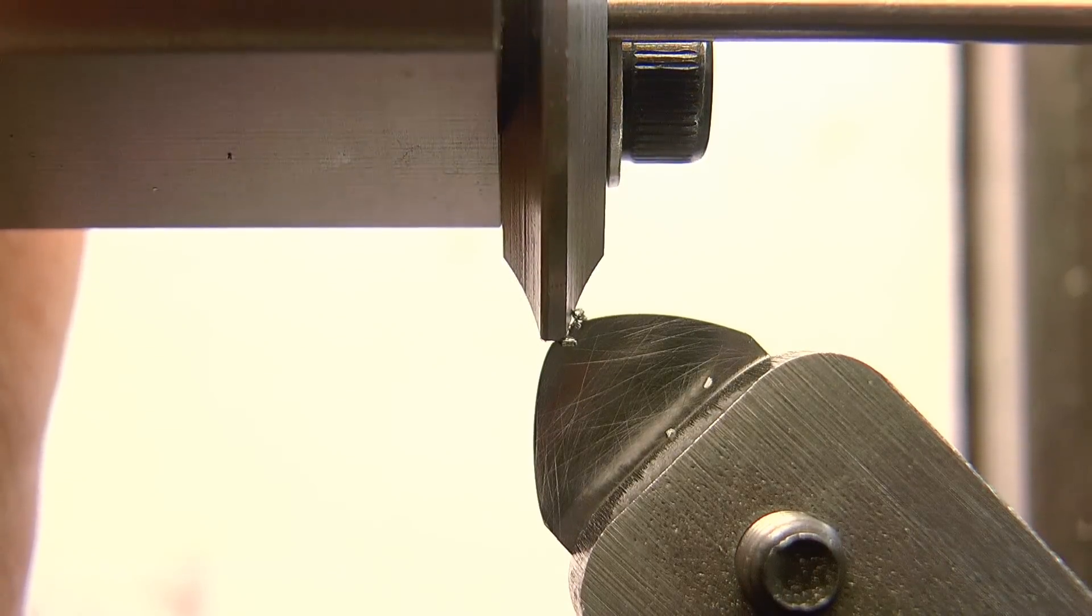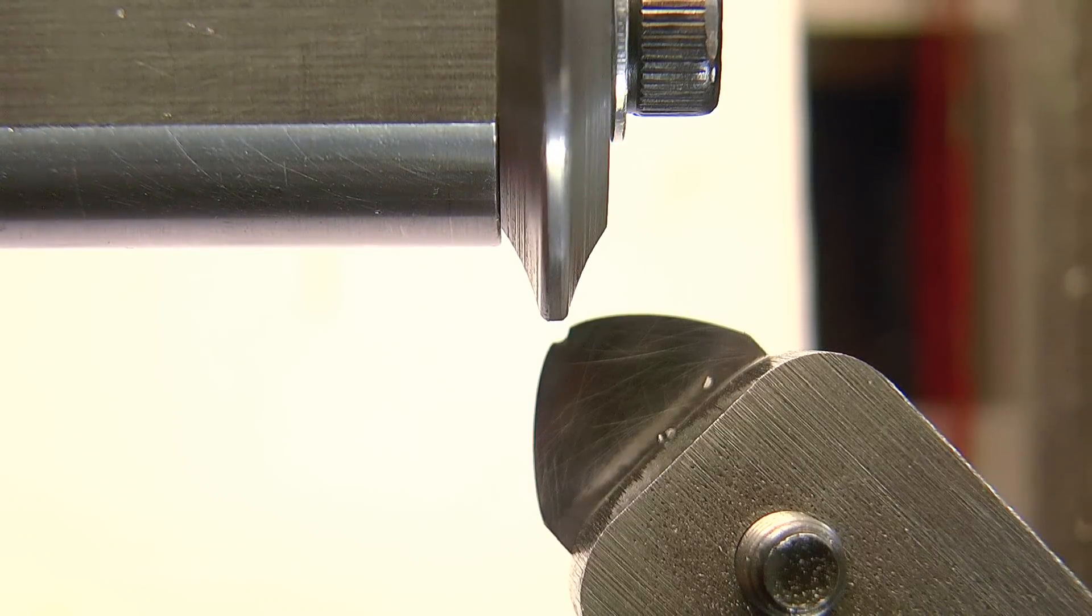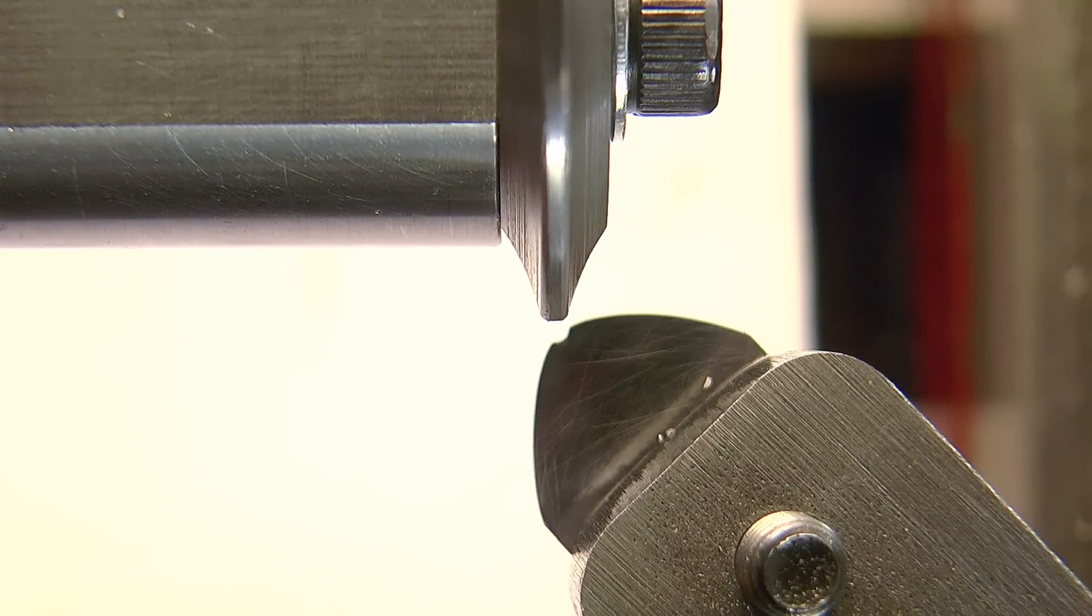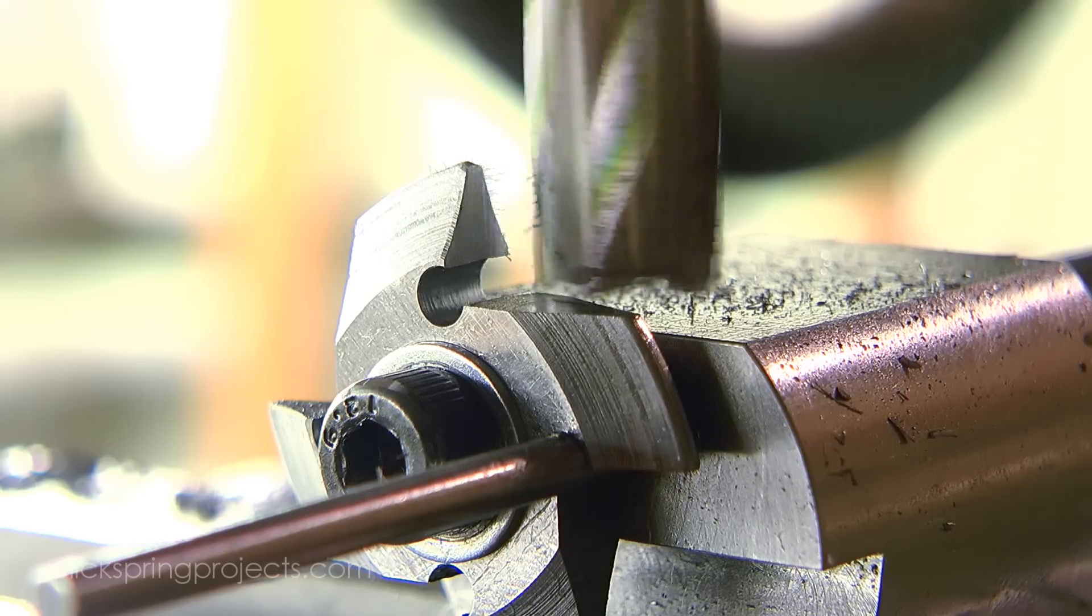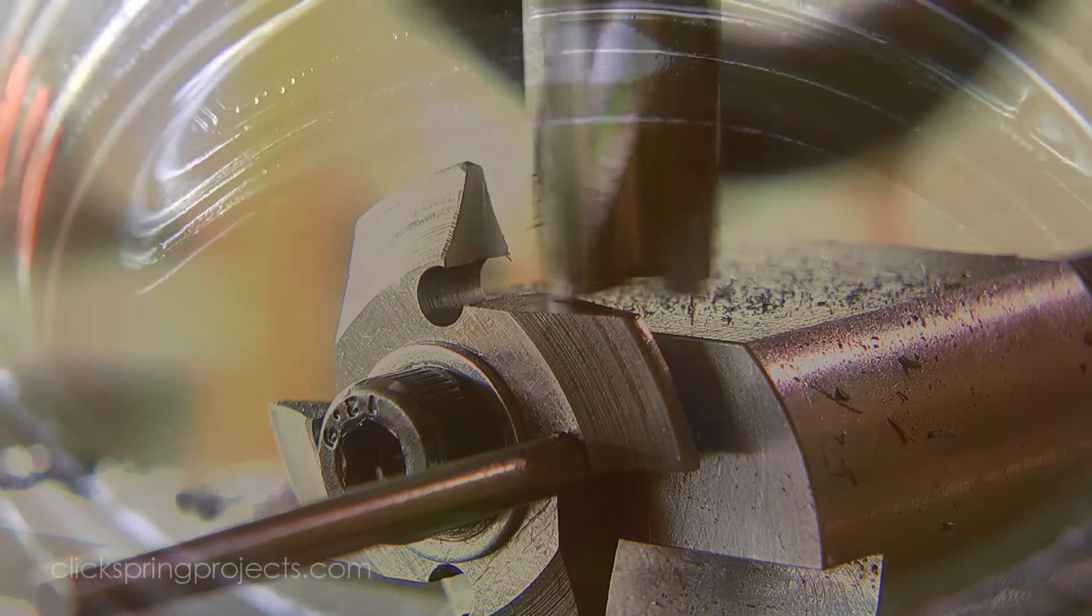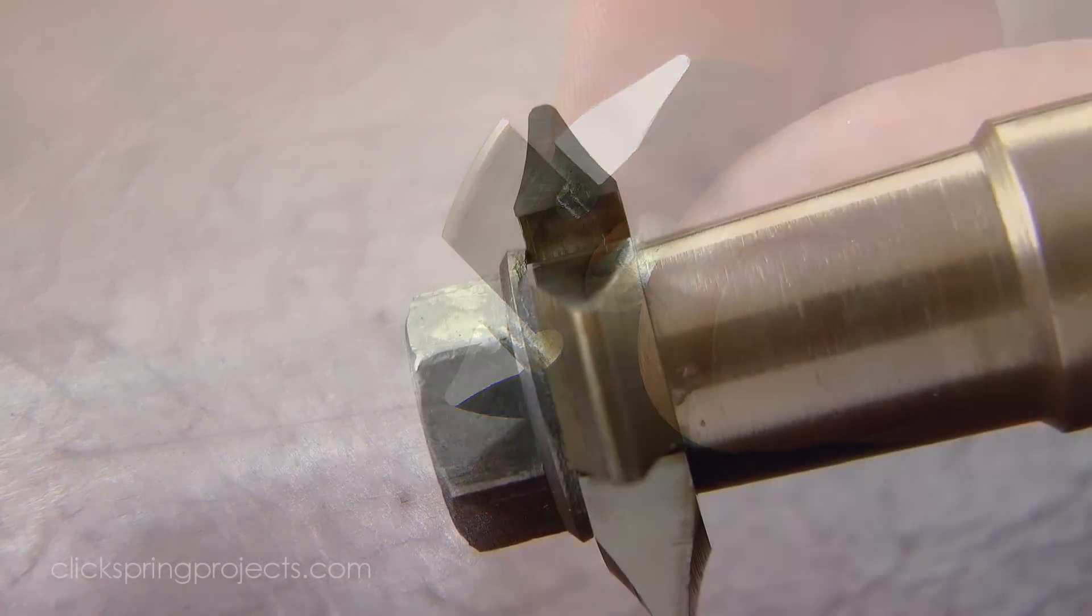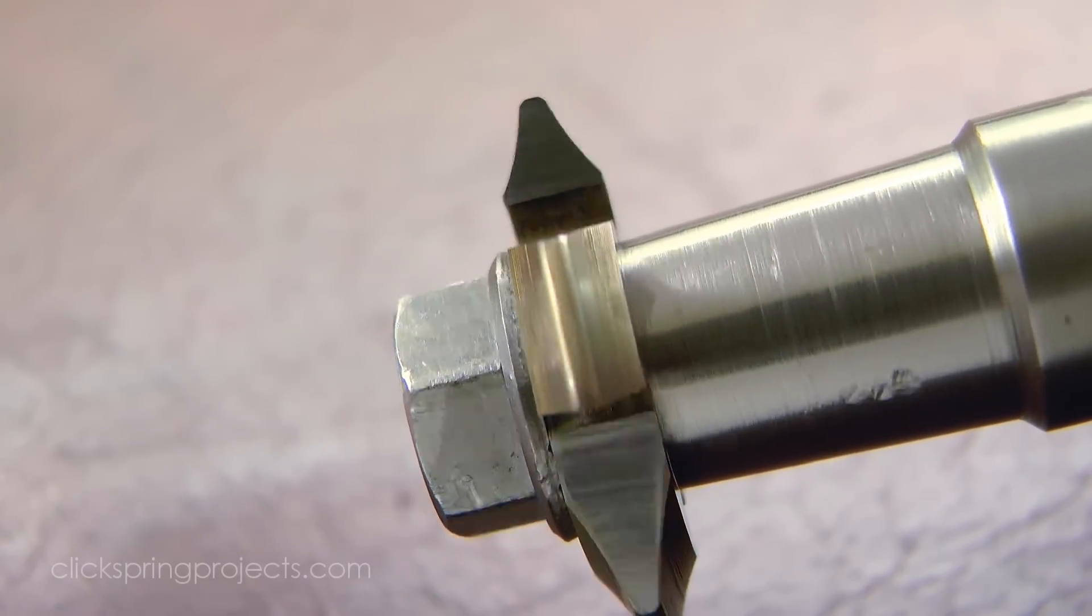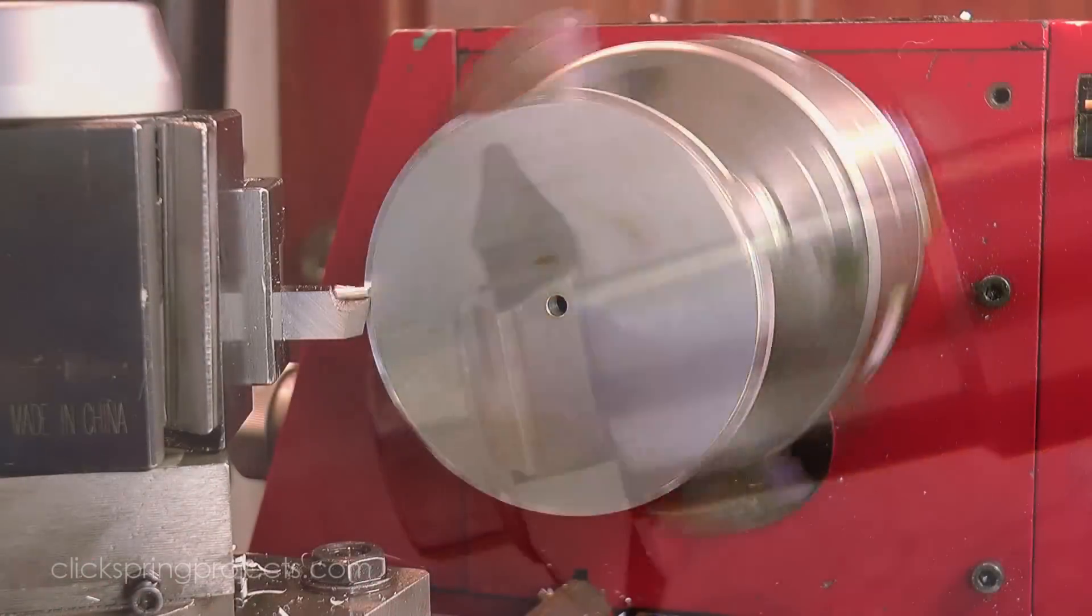And again once each side is complete, the cutter blank is flipped and the other side completed in exactly the same way. And so we have another 1.5 module 45 tooth gear cutter similar to before, but this time with the more familiar root fillets that we would expect to see in a commercial gear cutter.